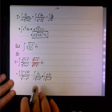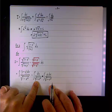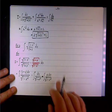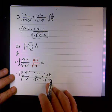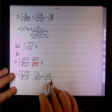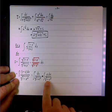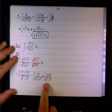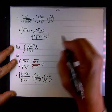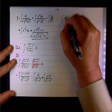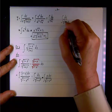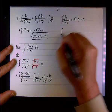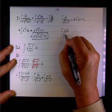The first integral — dx over square root of (1 minus x squared) — is the inverse sine of x plus c1.